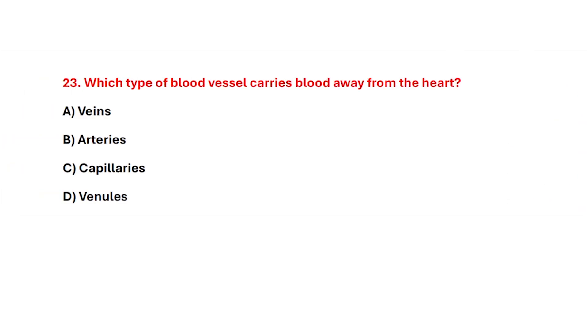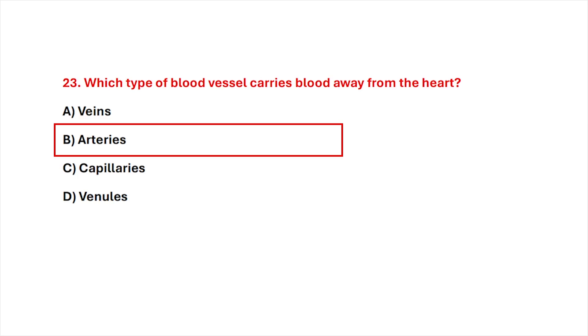Question 23. Which type of blood vessels carries blood away from the heart? Correct answer is option B, arteries.